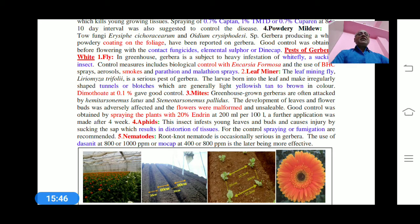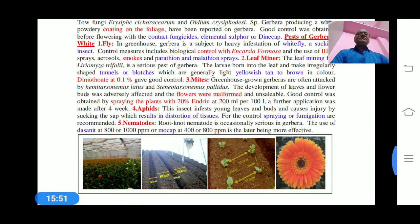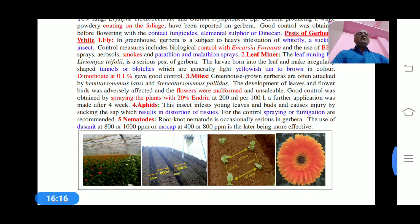Leaf miner is another fly and a very serious pest of gerbera. The larvae bore into the leaf and make irregularly shaped tunnels or blotches, generally lightly yellowish or tan to brown in color. It can be controlled by spraying dimethoate at 1% for good results.